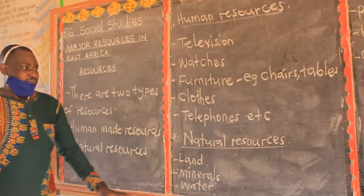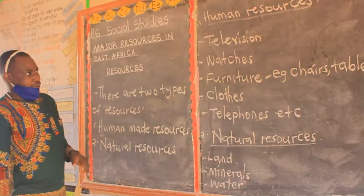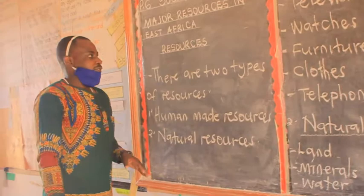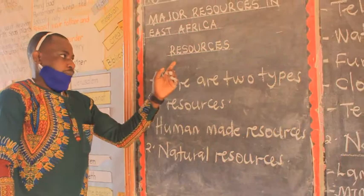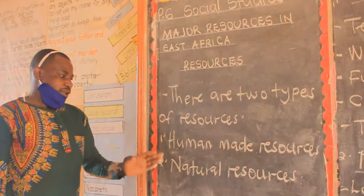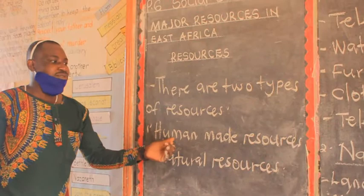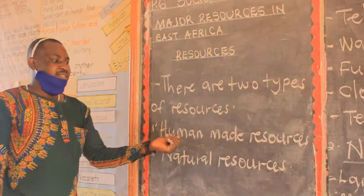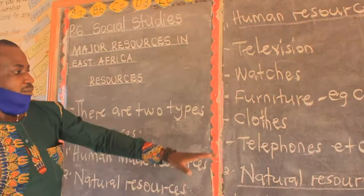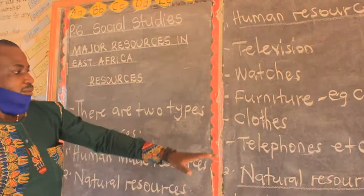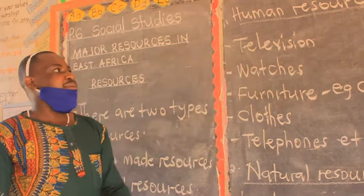Today we looked at the major resources in East Africa. Resources are components of the environment that people use to satisfy their needs. We have two types: human-made resources and natural resources. Human-made resources are made by people — examples include televisions, watches, furniture, clothes, and telephones.